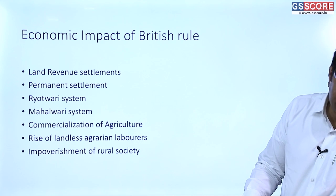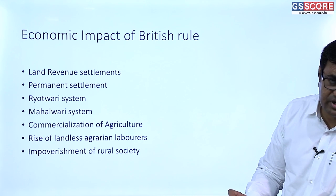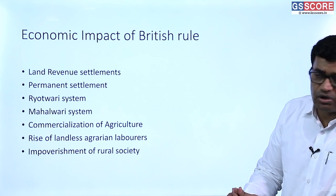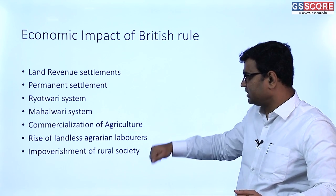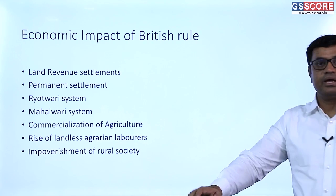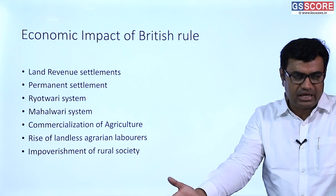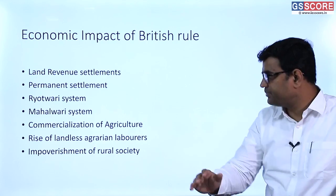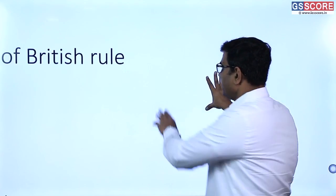Because of land revenue settlements, peasants lost ownership rights and became agrarian laborers. This resulted in the impoverishment of rural society. Famines became a regular feature, affecting masses in all major forms. These were key aspects of British economic policy in India.